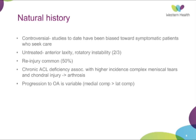The natural history is still relatively controversial. A lot of the studies out there are quite biased in terms of the patient population — they tend to be patients that seek reconstructive surgery, and they tend to be younger populations who are more physically active. Left untreated, we know that you're more likely to have anterior laxity and rotatory instability, which is seen in up to two-thirds of patients. Re-injury is quite common — up to 50% — due to the recurrent instability of the knee. Chronic ACLs are associated with a higher incidence of complex meniscal tears and associated chondral injury, and this is thought to lead to arthrosis.